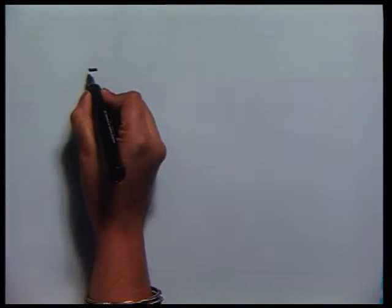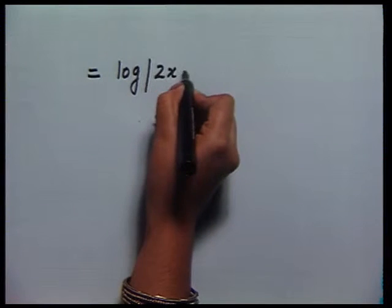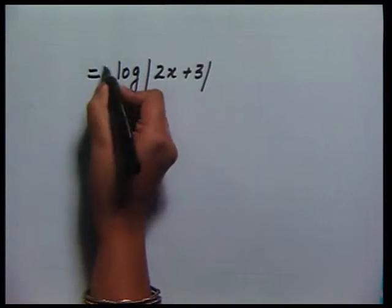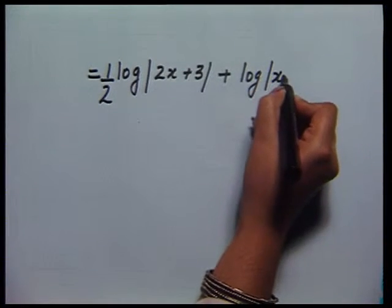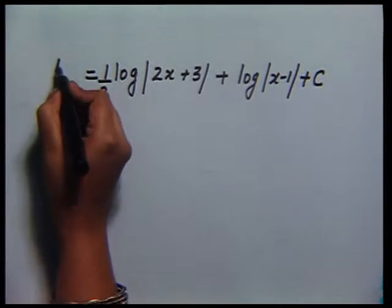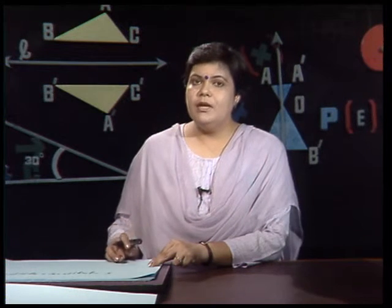That becomes (1/2)log|2x+3| — dividing by the coefficient of x — plus log|x-1| plus the constant of integration C. That is exactly what the integral turns out to be, simple enough. But you must be very careful because such questions can easily bring in calculation errors and things can go very wrong.